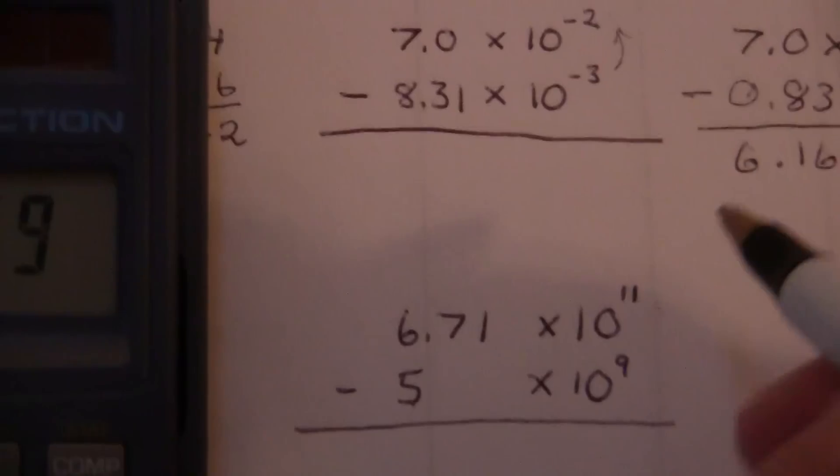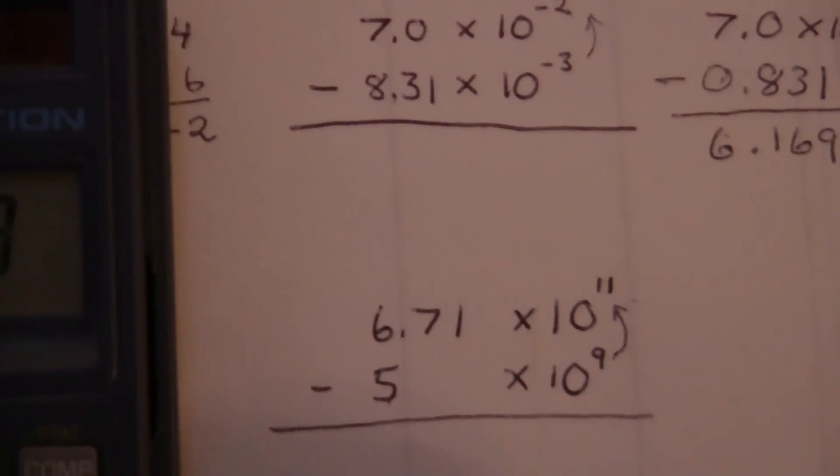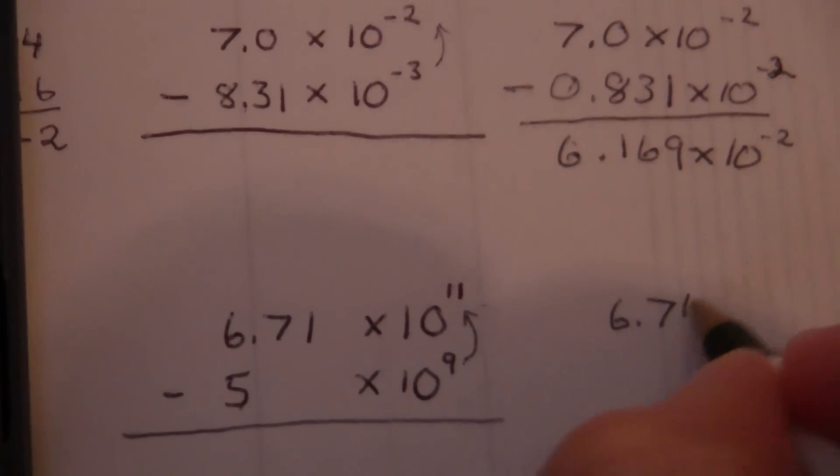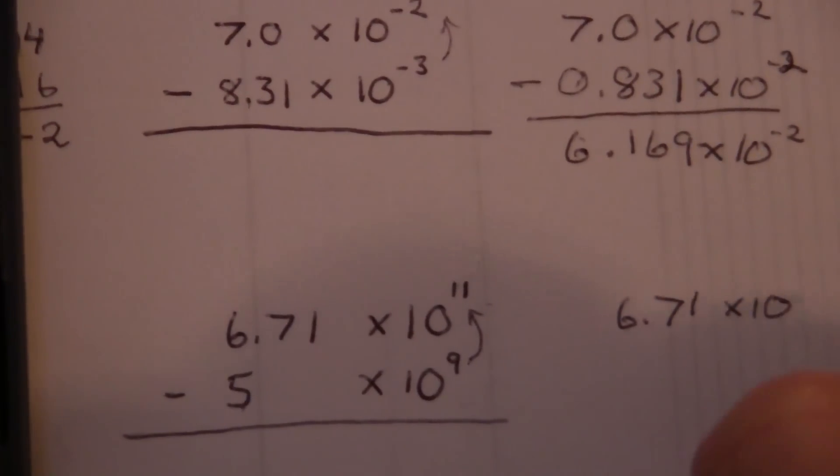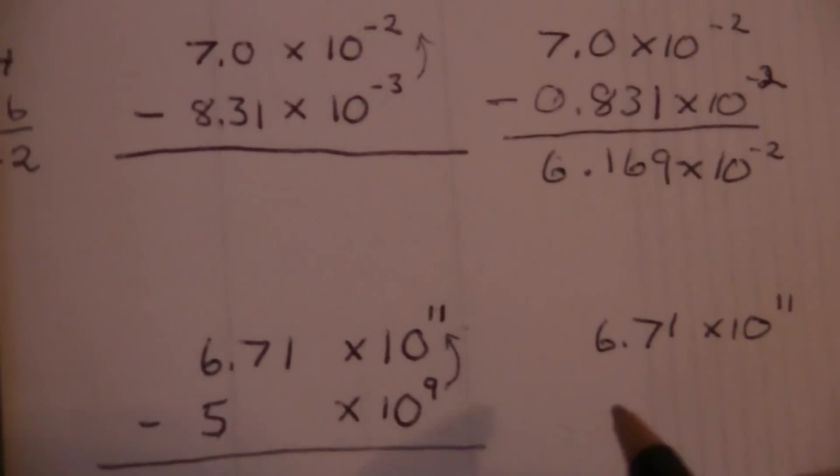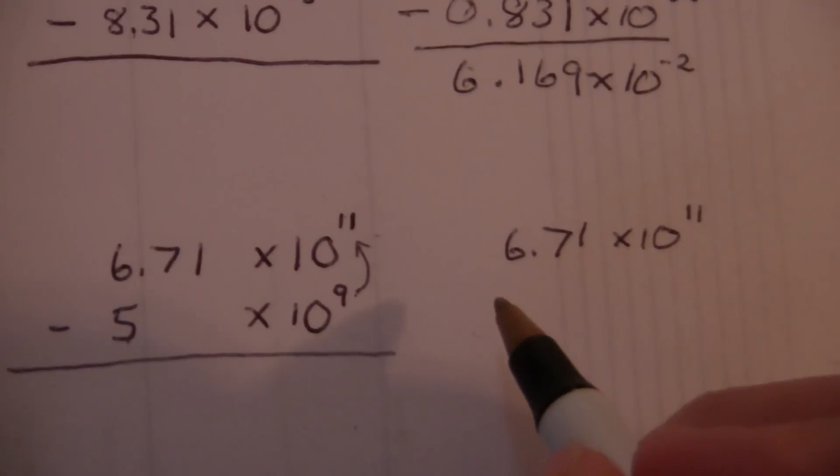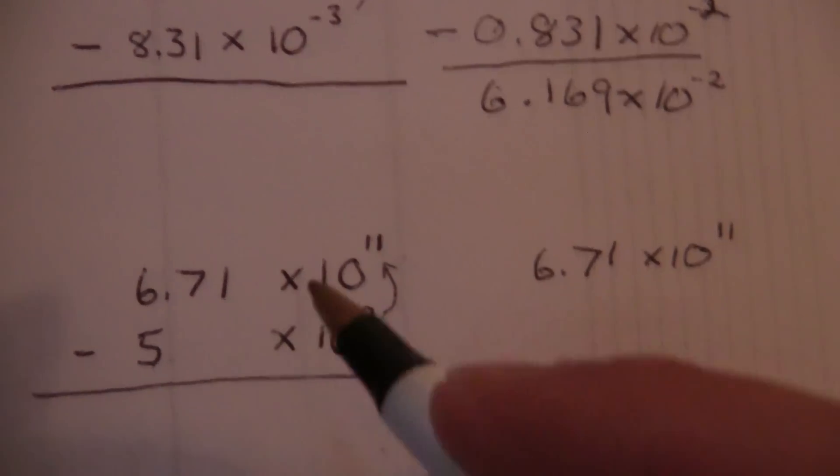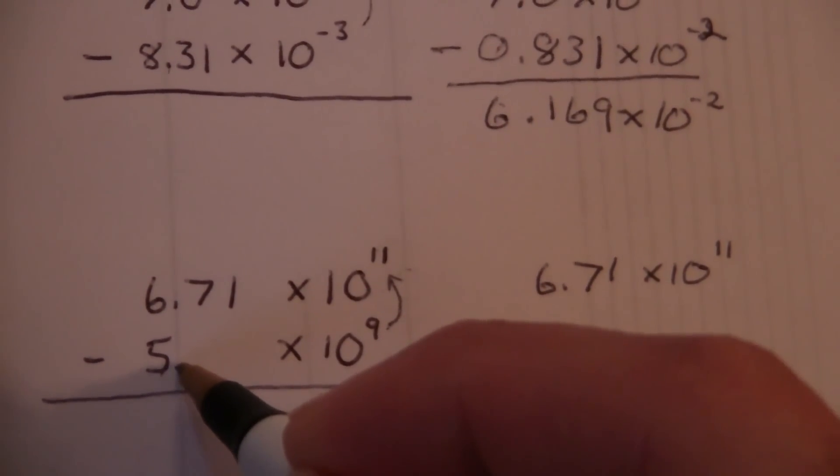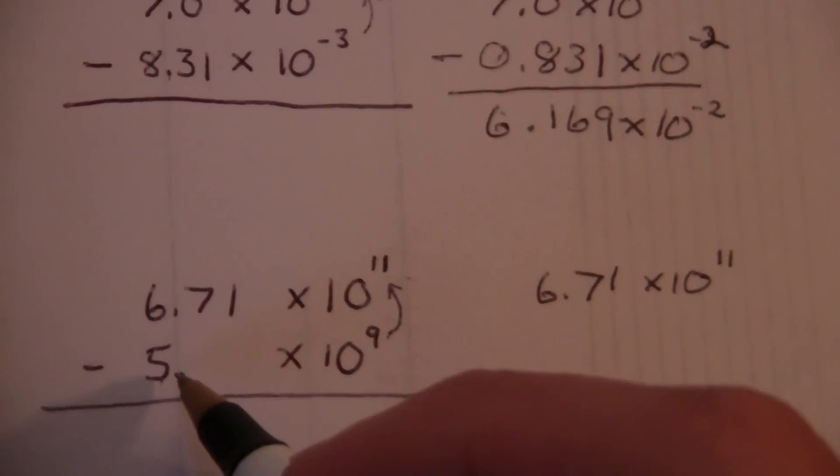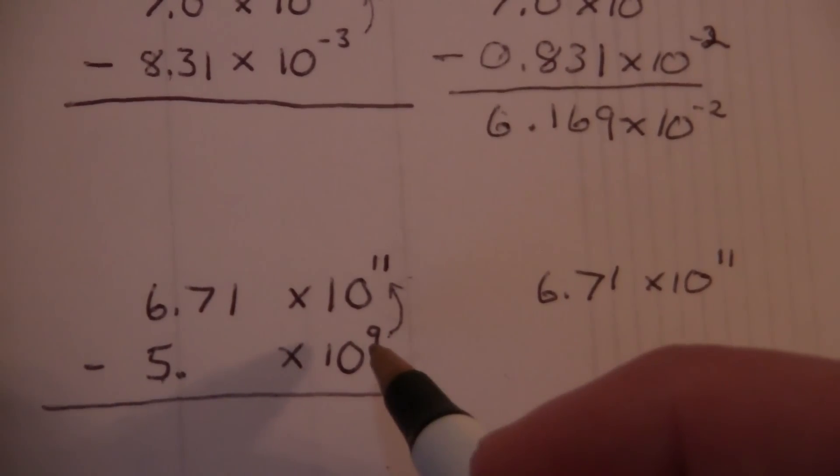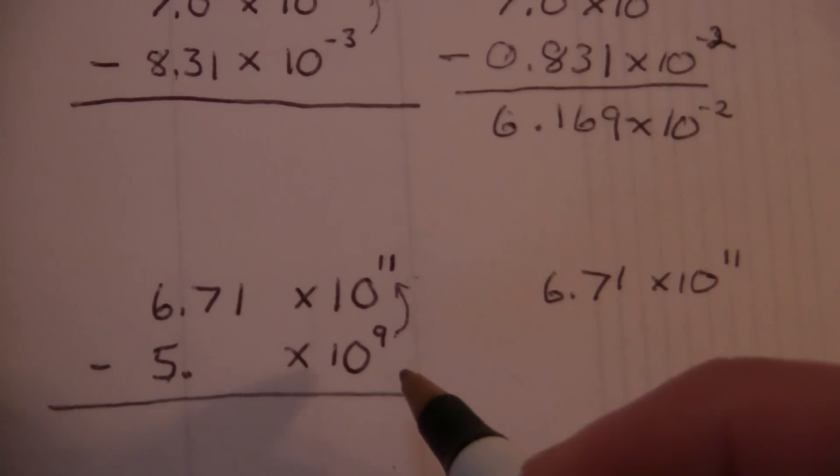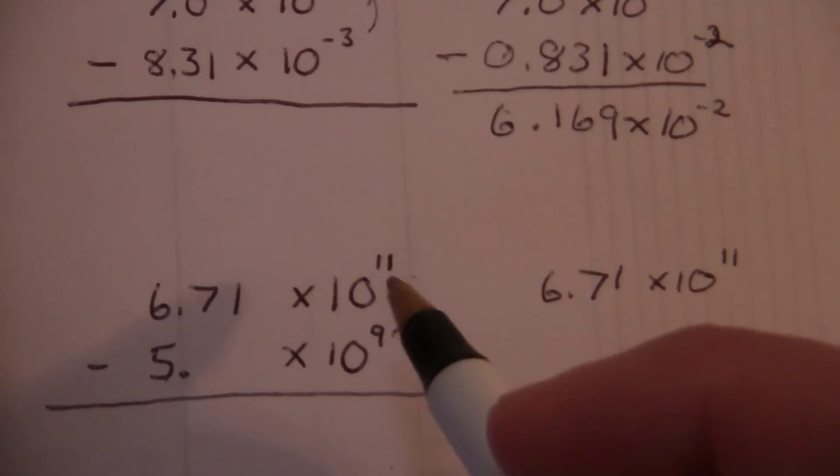We need to convert these so that they're both the same. We'll go from the smaller to the larger, 6.71 times 10 to the 11th, and then 5 times 10 to the 9th. So what this is saying is I'm moving it 9 places to the right. I want to get to that same place by moving it 11 places to the right.